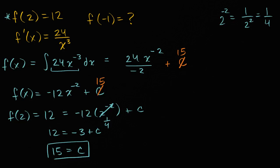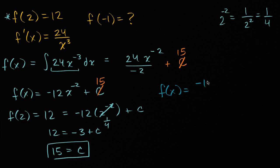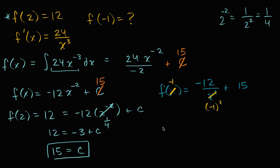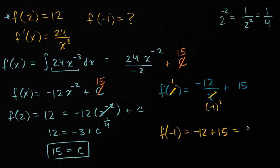So now we can write f of x as negative 12 over x squared plus 15. Using that, we can evaluate f of negative one. Wherever we see an x we put negative one: f of negative one equals negative 12 divided by negative one squared, plus 15. Negative one squared is just one, so it's negative 12 plus 15, which equals three. And we're done — f of negative one equals three.